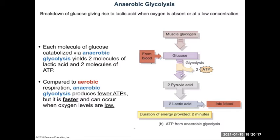Anaerobic glycolysis is much faster than aerobic respiration. So once your creatine phosphate is run out, you can start breaking down glucose this way immediately. It's faster, but it only produces those two ATPs.